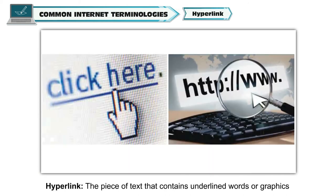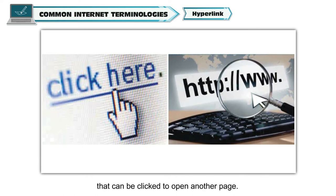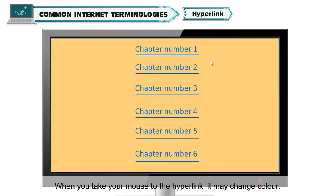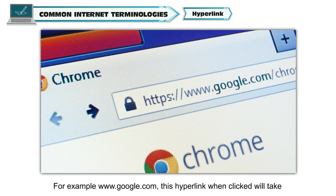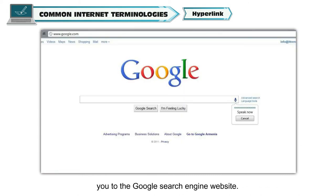Hyperlink. The piece of text that contains underlined words or graphics that can be clicked to open another page — it provides you additional or related information. When you take your mouse to the hyperlink, it may change color and your mouse pointer will change to a hand. For example, www.google.com — this hyperlink when clicked will take you to the Google search engine website.